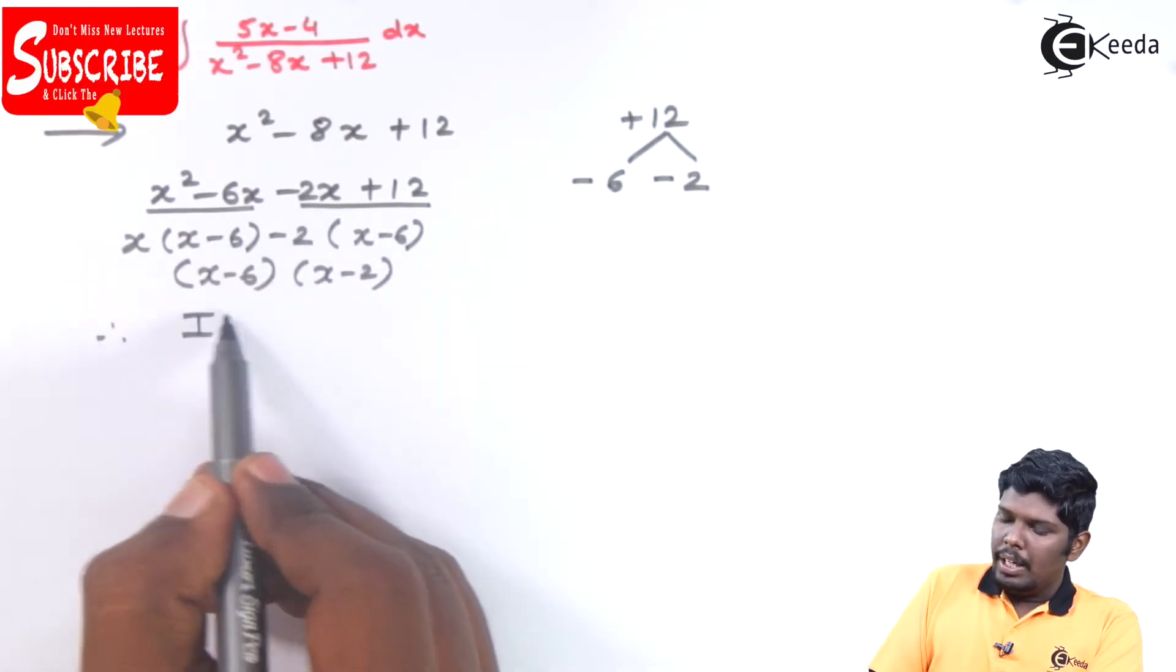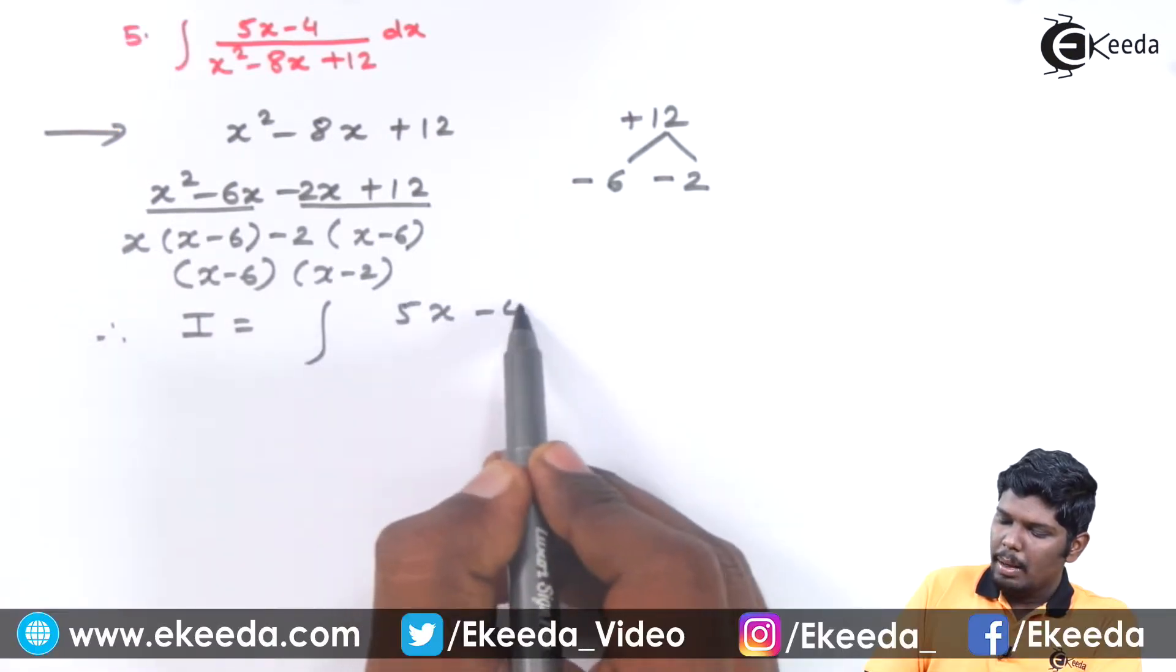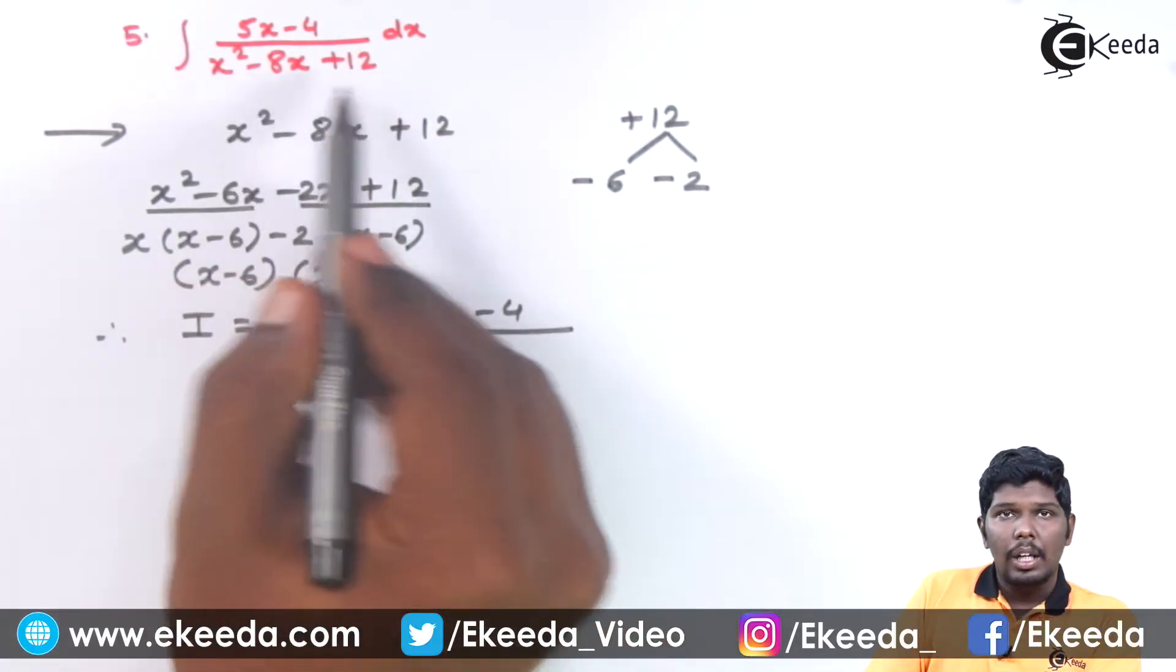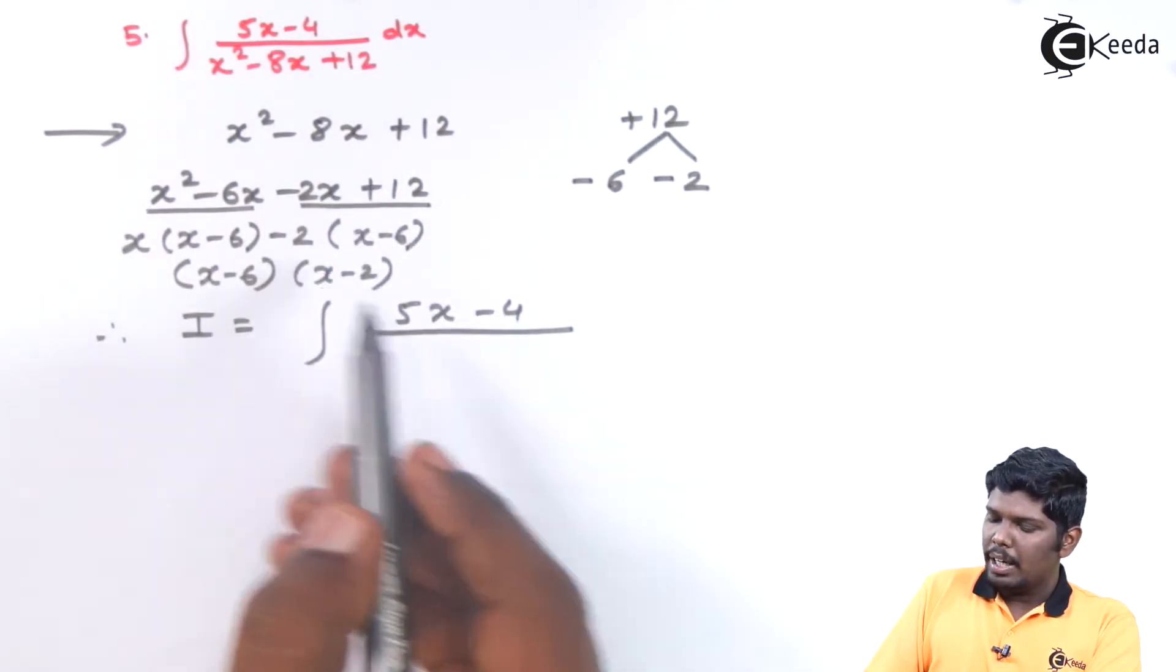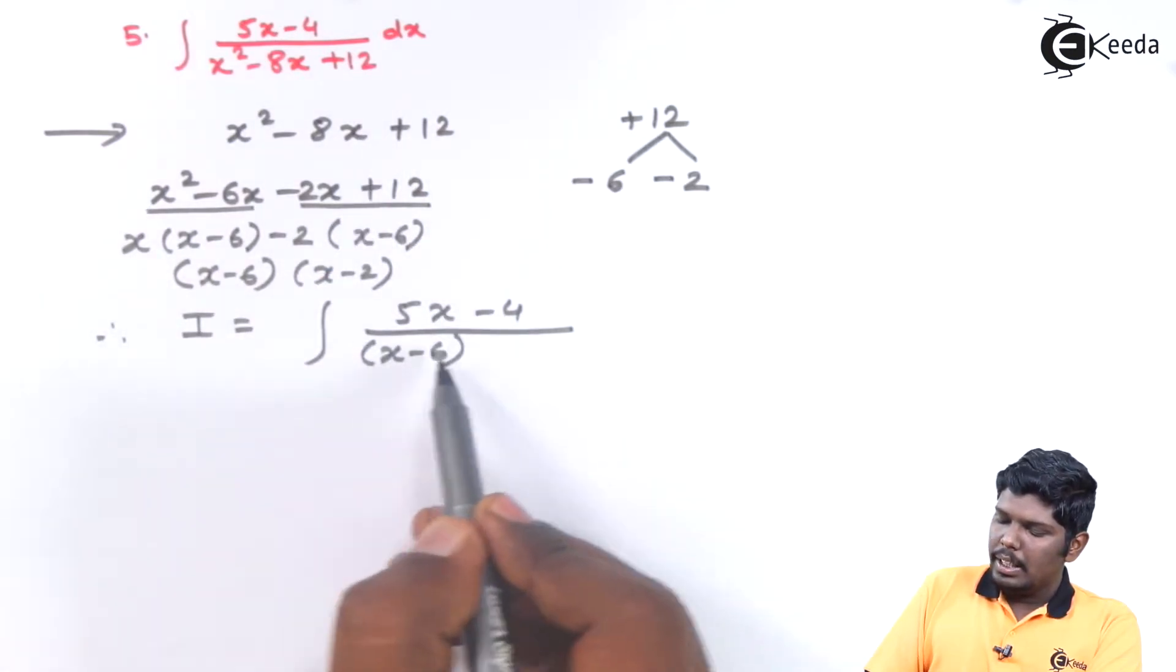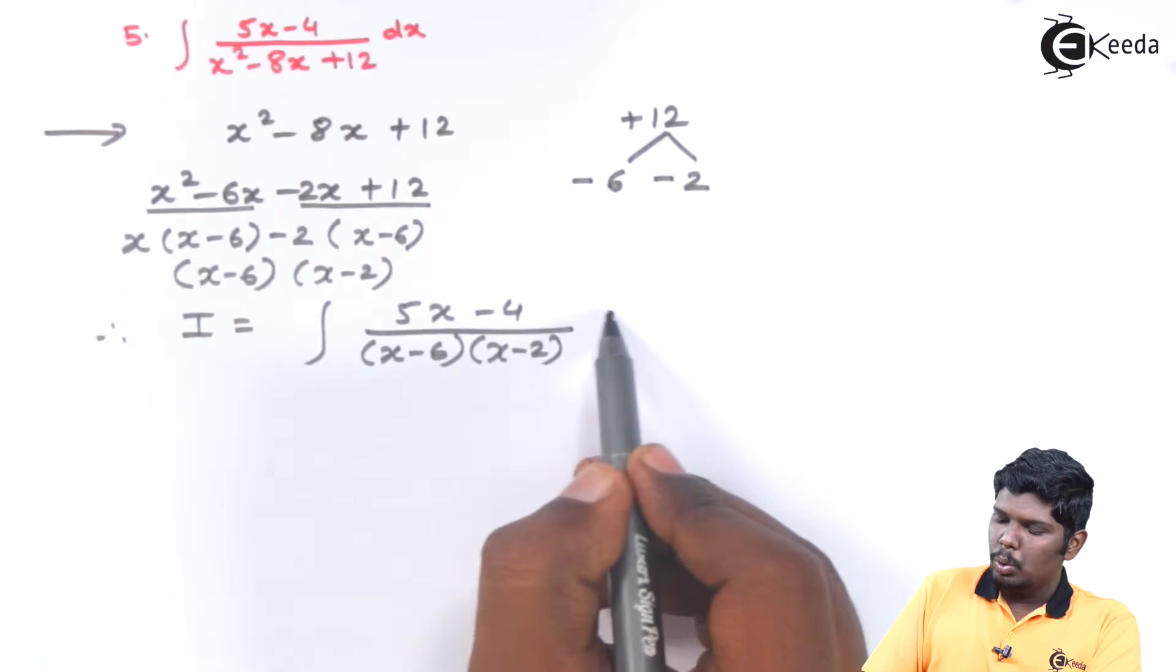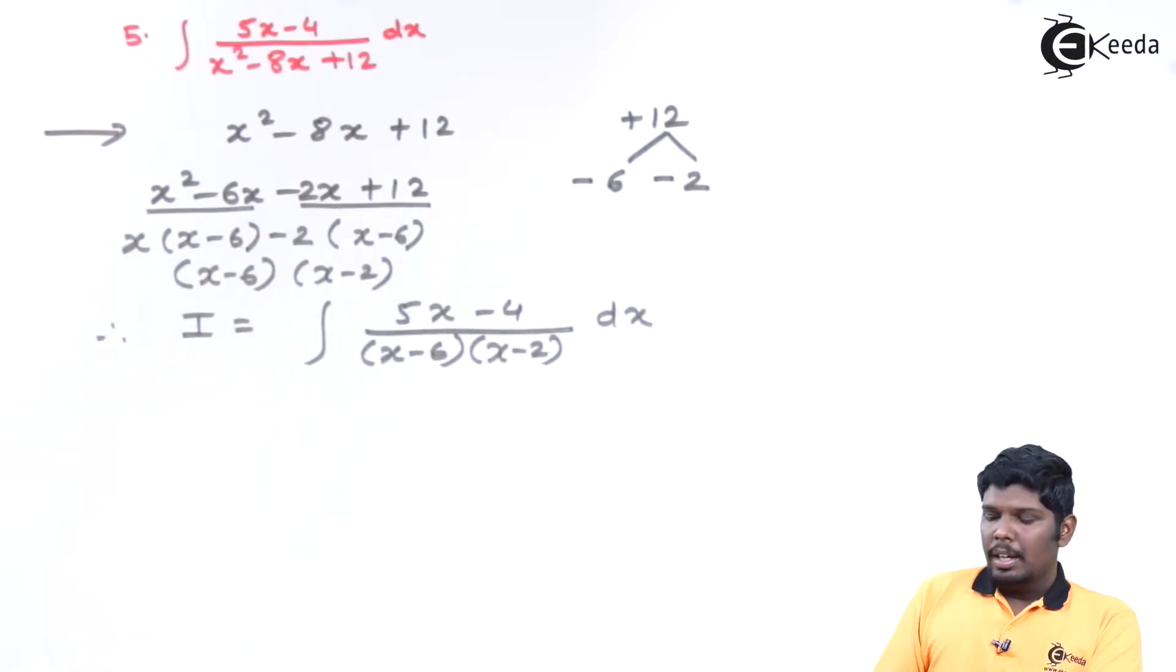The given integral i is written as 5x minus 4 upon the quadratic equation is now factorized as x minus 6 into x minus 2 dx. Let us convert this rational form into partial form.